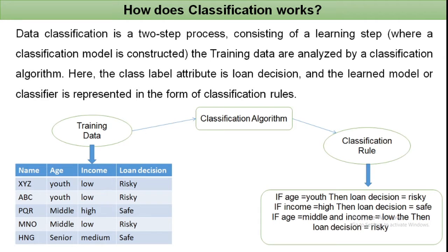Using the classification rule: if age is youth, the loan decision is 'risky'. If income is high, the loan decision is 'safe'. If age is middle and income is low, then the loan decision is 'risky'. In this way the classification rules are applied.